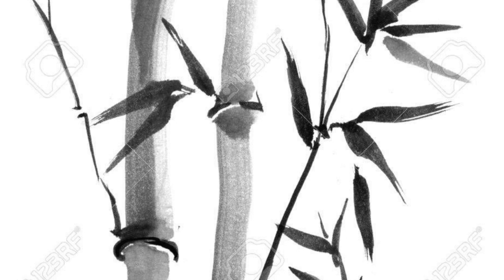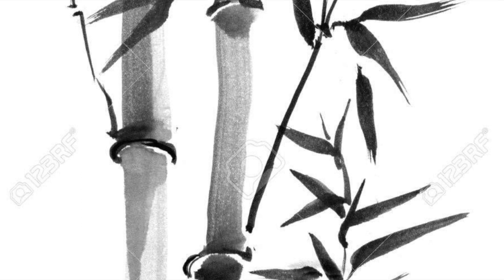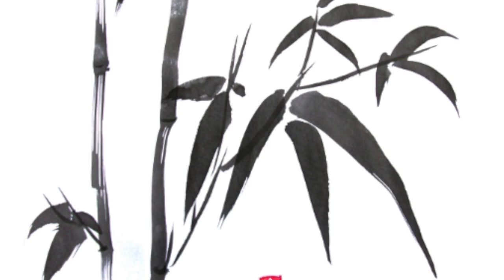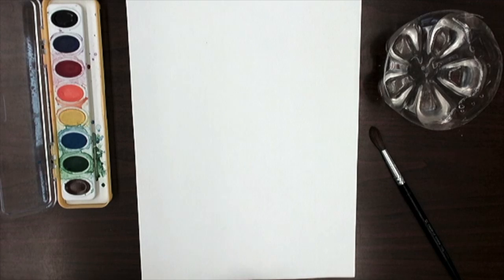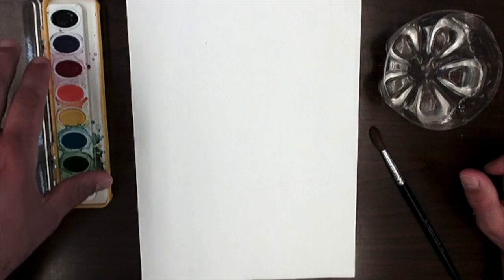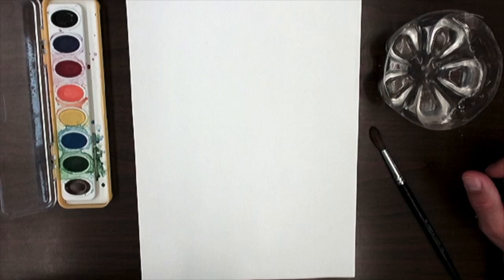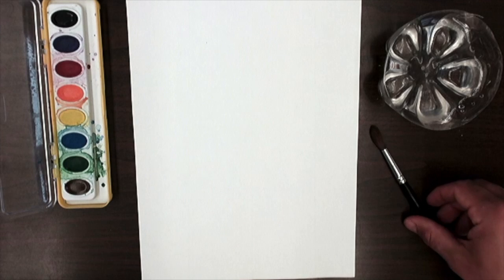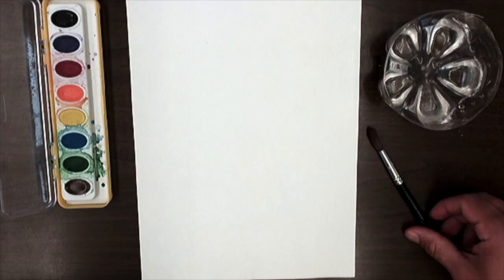For our project, we're going to be creating a sumi-e painting of bamboo, just like these pictures. Let's get started. To create our sumi-e painting, we're going to need a piece of paper, watercolor paint, water, and a paintbrush. If you don't have watercolor paint, you could do this with marker or even crayon.